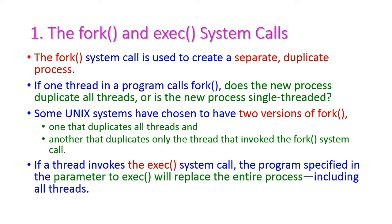The first one is fork and exec system call. The fork system call is used to create a duplicate process. That means if we have a parent process and execute fork, it will create a duplicate child process. This child is exactly similar to the parent. This is the purpose of fork.